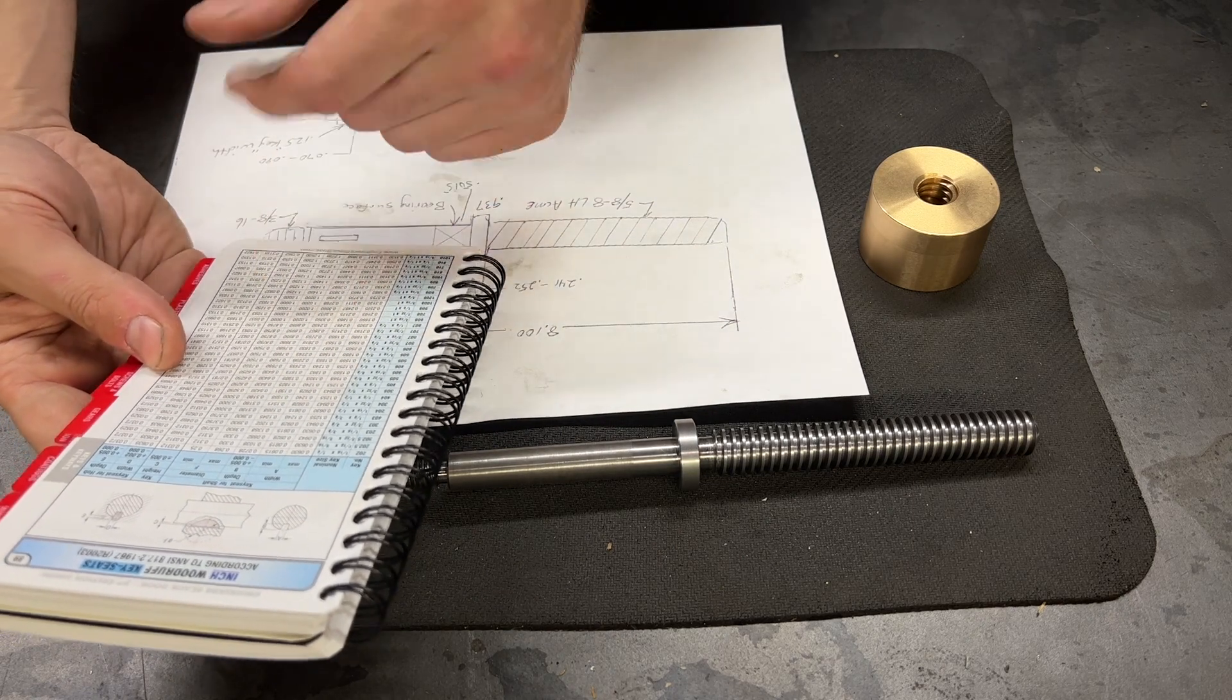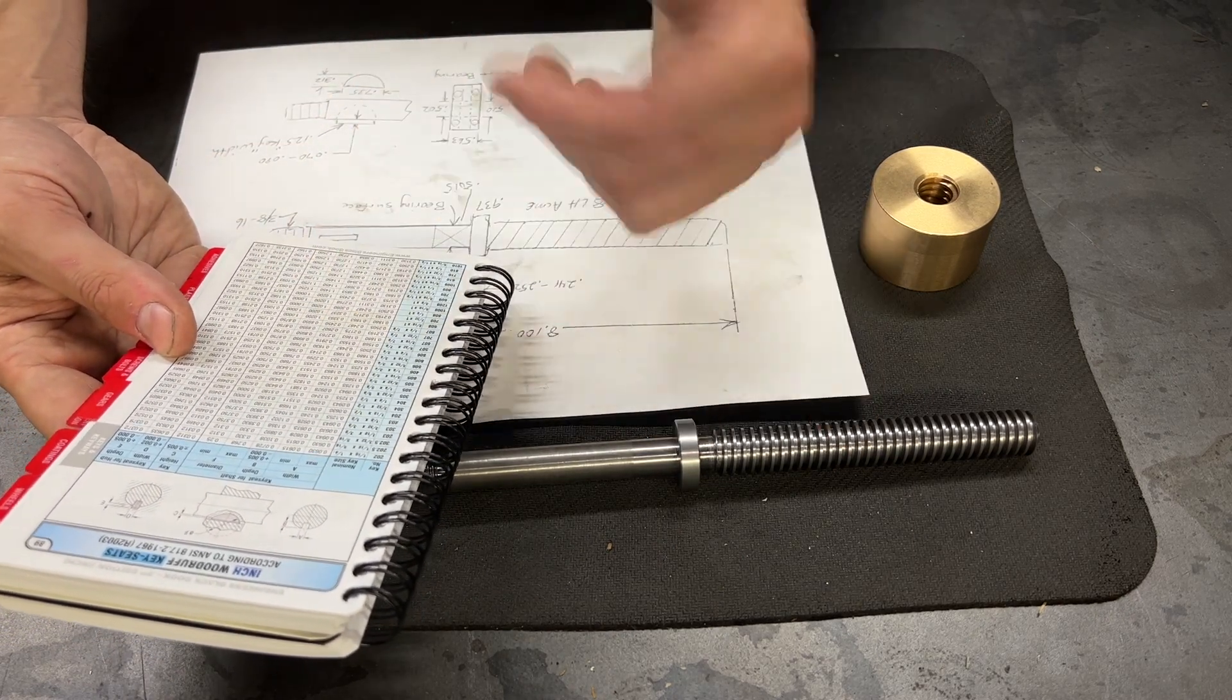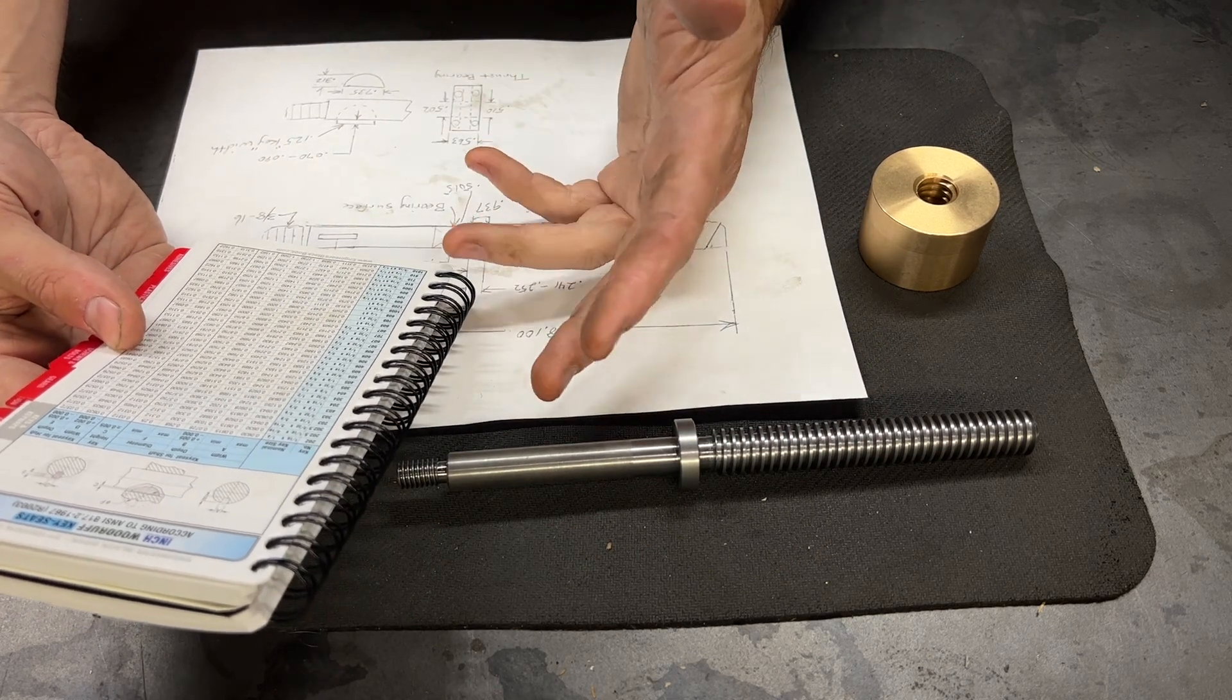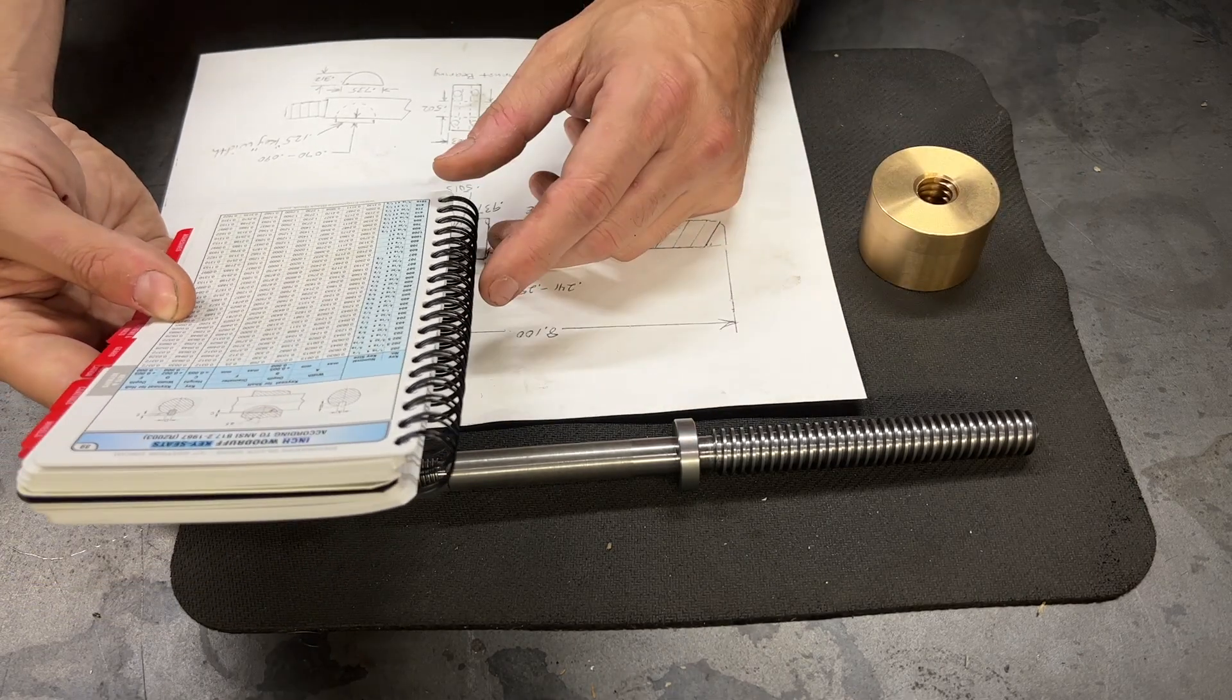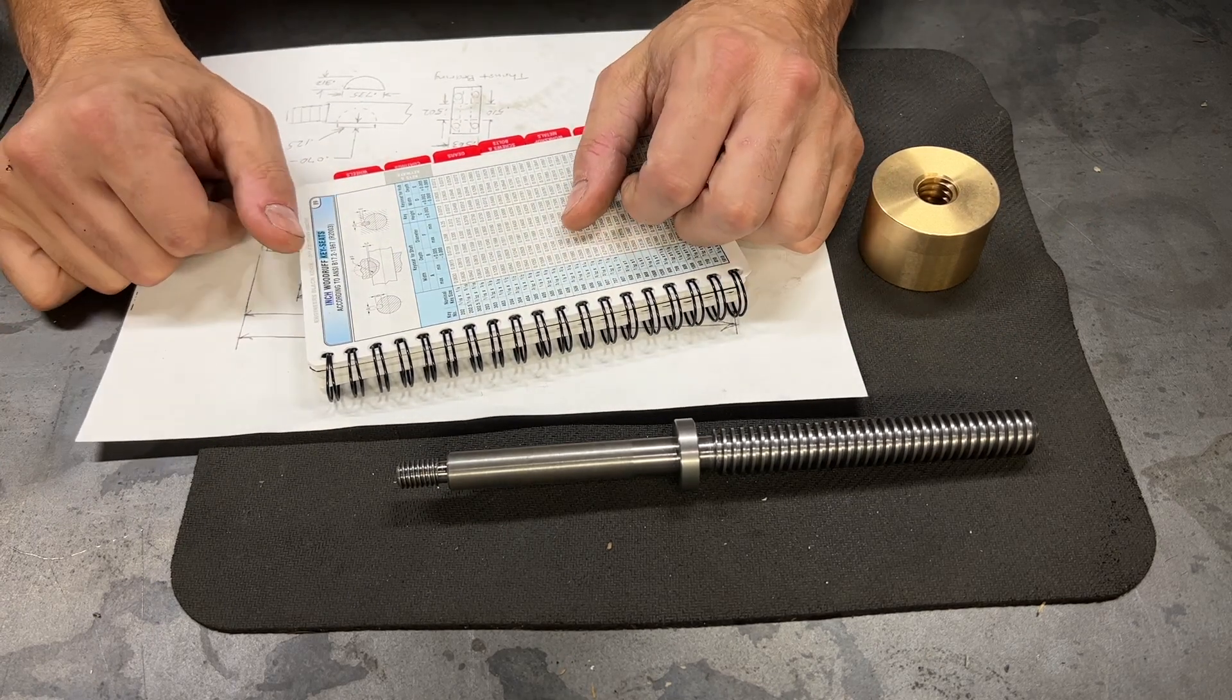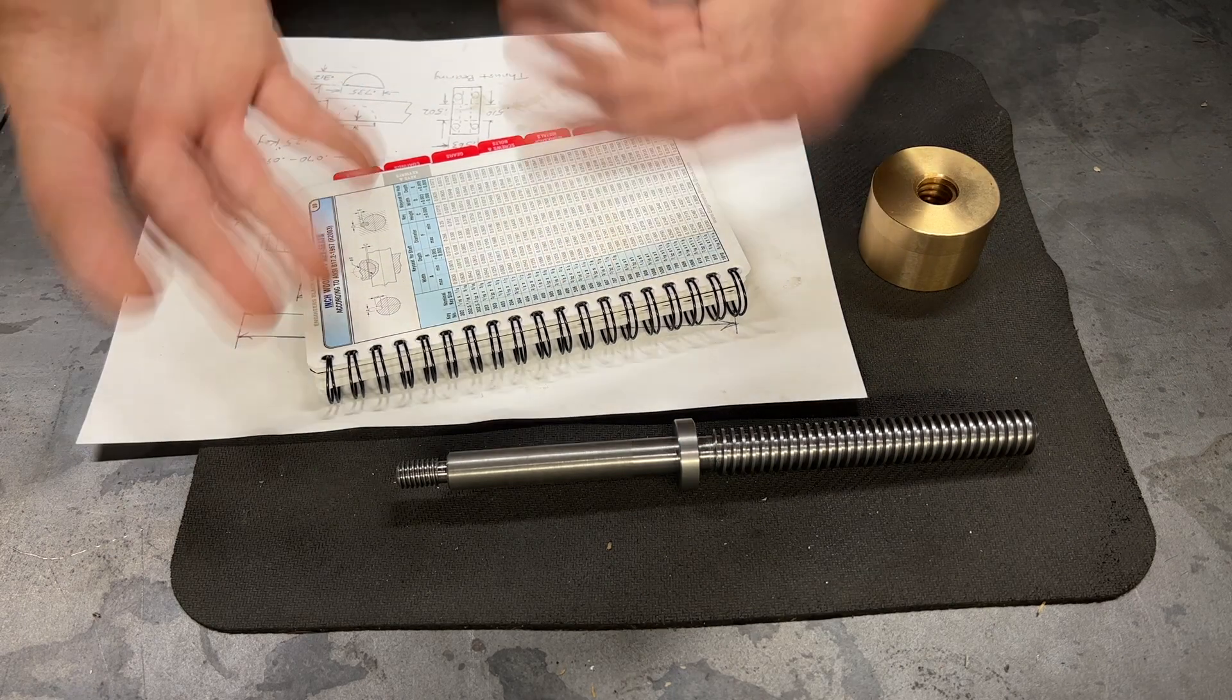I have been comparing these dimensions to the dimensions in this chart here for standard woodruff key seat sizes. These all fall nicely within the tolerance for a number 406 woodruff key. That is a 1 1/8 by 3 quarter inch woodruff key. The whole time I have been working on this project, I had convinced myself in my mind that I had the correct cutter for this key.